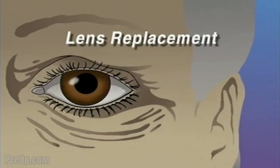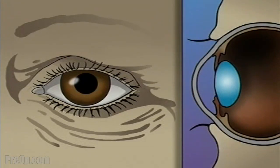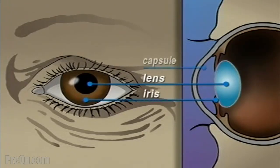Your doctor has recommended that you undergo lens replacement surgery to treat a cataract, but what does that actually mean? The human eye is constructed like a camera with a clear lens in the front. The lens is located just behind the iris and is contained in an elastic capsule. This capsule will serve as the housing for the new lens.